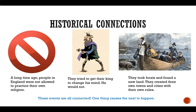So these events are all connected. One thing causes the next thing to happen. The first problem they have is that they're not allowed to practice their own religion, and that causes them to ask their king to change his mind. He does not change his mind.